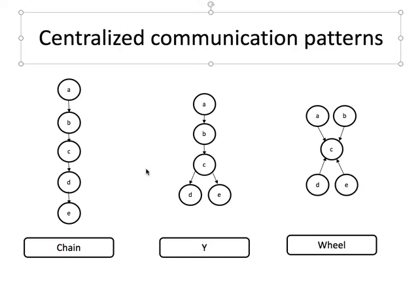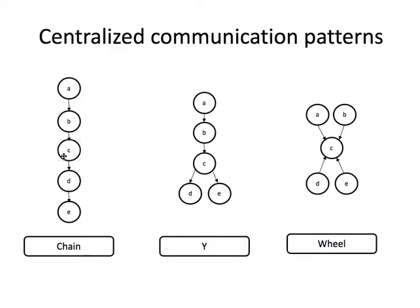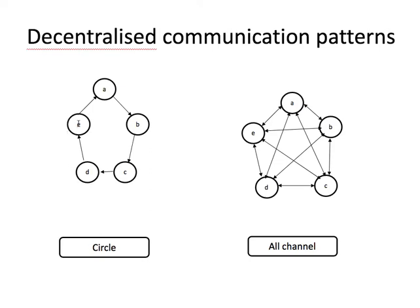Bales also identified wheels, where information is fed to a central actor. Then circles, where everybody speaks to one other person but it is decentralised — so the person at the bottom of a chain still communicates back to the first person. Finally, there is the all-channel communication network, where everybody is free to talk equally to each other.